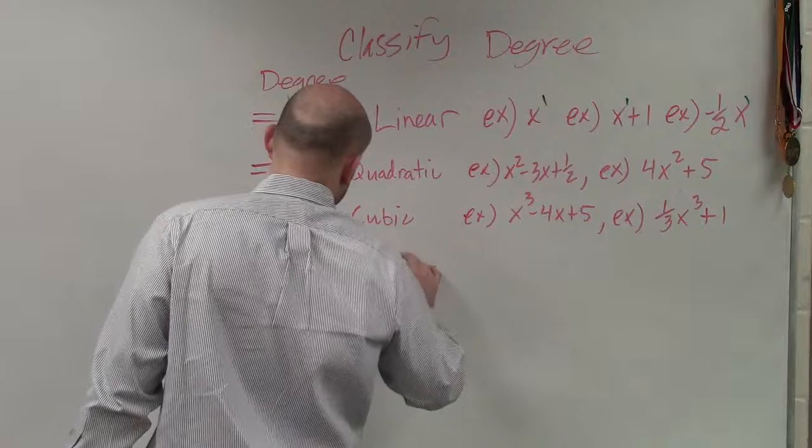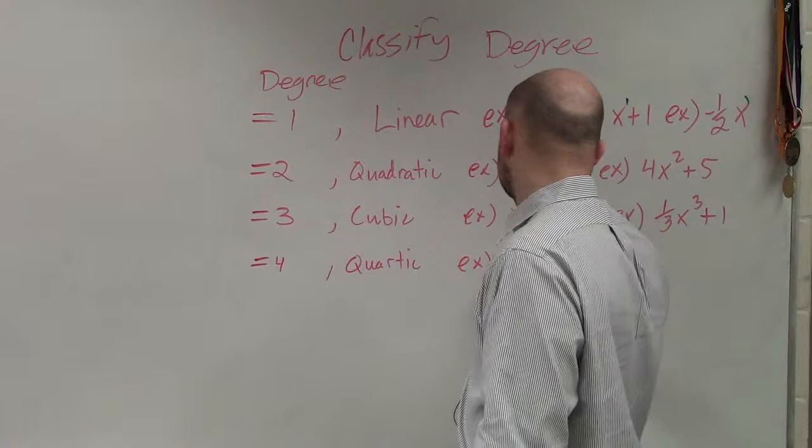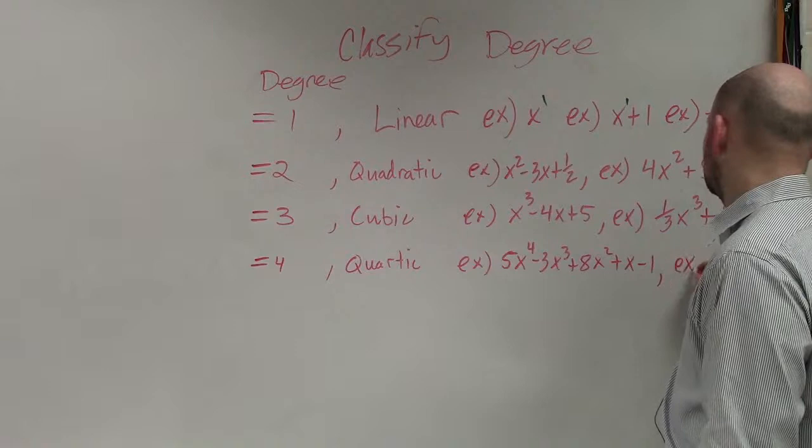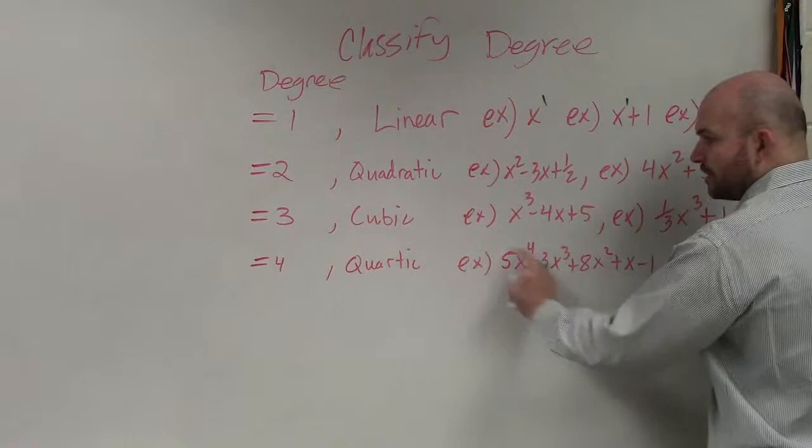And then if you have it equal to 4, that's what we call a quartic. So again, as you guys look through these and you're writing them down because yes, you will need to know these when you're doing your work to classify them, you're going to want to notice that you guys look at this one. This has a lot of monomials, doesn't it? But the degree, the largest degree of all of them is 4. That's why the degree of this polynomial is 4. So therefore we call it a quartic.